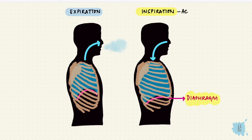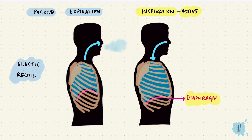Inspiration is active — muscles actually have to actively contract for it to happen. Expiration is passive. The lungs have elastic properties, so it results in recoil when stretched. So in quiet expiration, the muscles used during inspiration just relax.